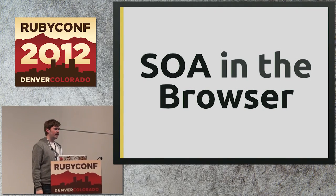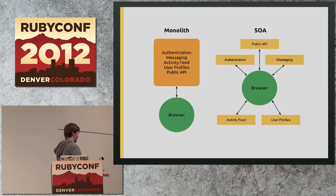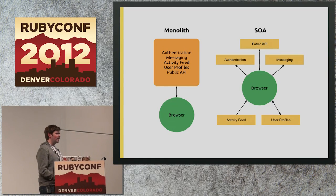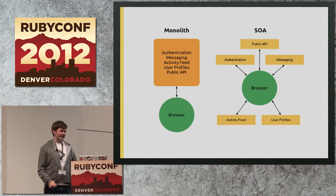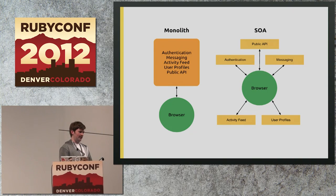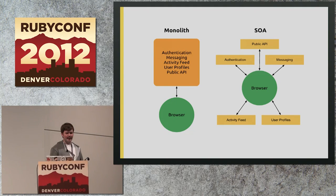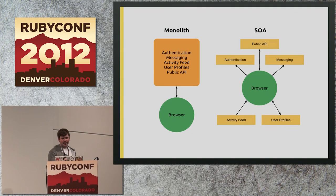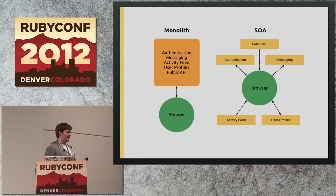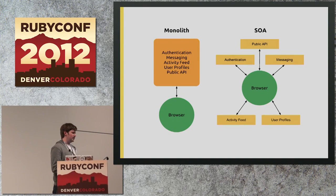This brings us back to SOA in the browser. In a traditional application, you might have a monolithic Rails app that incorporates all the different aspects of your application — authentication, user messaging, an activity feed, profiles, a public API. That's a single point the browser is communicating with. If you take the service-oriented approach, you take each of these components and break them out into independent services. That can mean they're logically separate even if on the same server, or they can be entirely different languages, runtimes, server infrastructure — different everything.